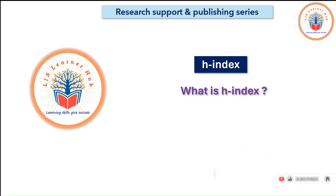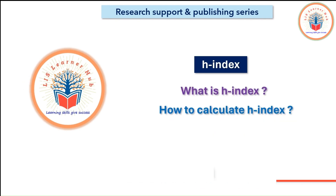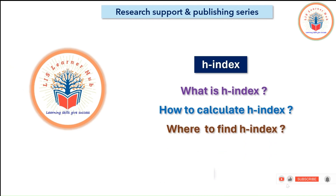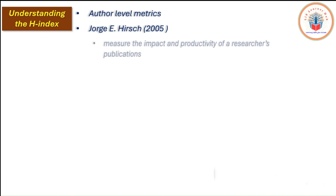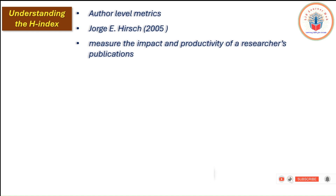In this series we will discuss the H-index — how to calculate it and what it tells us. The H-index is an author-level metric. It was given by J.E. Hirsch in the year 2005, which is why the H-index is also known as the Hirsch index. It measures the impact and productivity of a researcher's publications. Productivity means the total papers the author has written, and impact means the citations those papers have received.